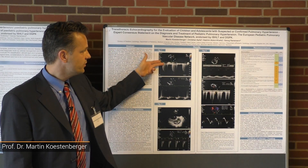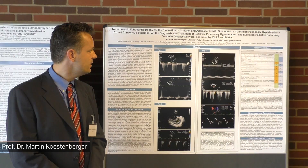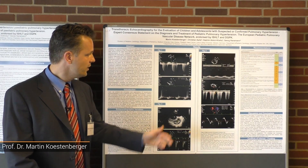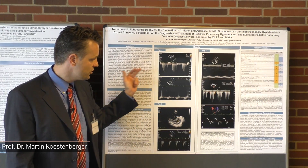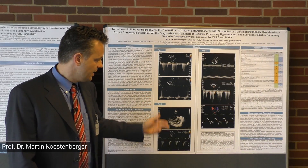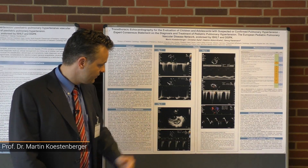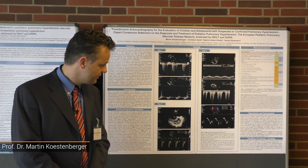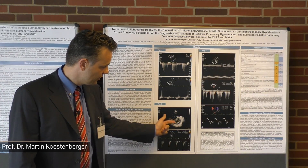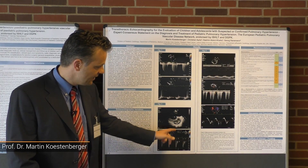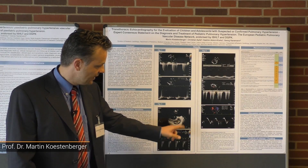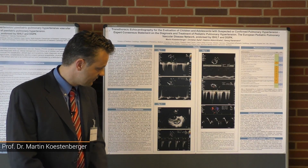We measure the tricuspid regurgitation velocity in the apical 4-chamber view. In the parasternal short axis, we measure the mean diastolic PAP, and in the parasternal short axis view we can measure the relation of right ventricular to left ventricular size, as well as the left ventricular eccentricity index.